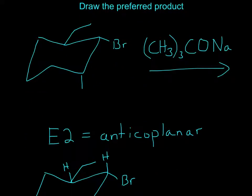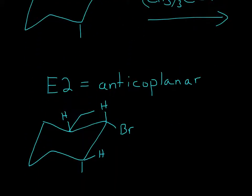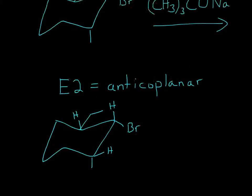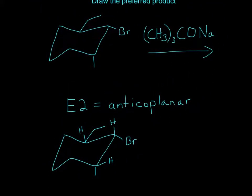Now, strong bases are E2 reactions, right? And the key thing about E2 reactions is that they have to be anti-coplanar. Now, for anti-coplanar, we have to decide where the double bond will form, right? E2s create alkenes.